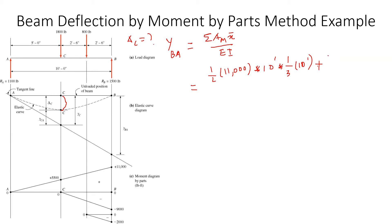Plus the BC 9,000 triangle, which is negative, so it's minus one-half times the base which is 5 feet times the height which is 9,000 pound-feet times the distance x-bar. From B, the x-bar is one-third of 5 feet.